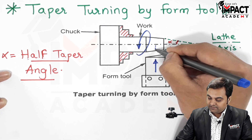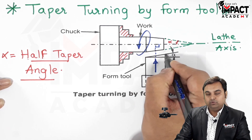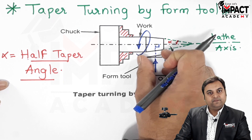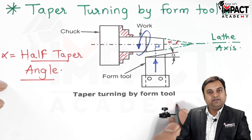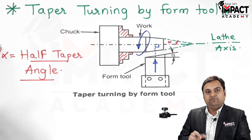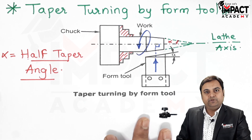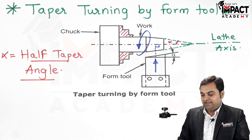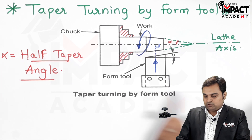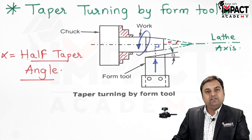The tool moves in a direction which is perpendicular to the axis of the lathe, and whatever is the shape of the cutting tool, that is transferred onto the workpiece, and we get this taper onto the workpiece. Such a method — that is, taper turning by using the form tool — is to be used if we want taper only up to a small or very short length. If the length of taper is considerable or increasing, then this method cannot be used. For that, we have to use some other method, like swiveling the compound rest. In short, taper turning by form tool method is to be used for short lengths of taper in a given workpiece.